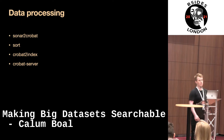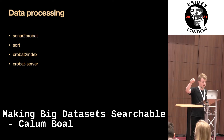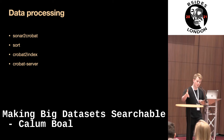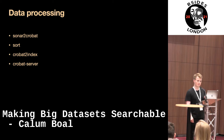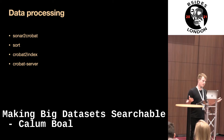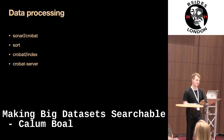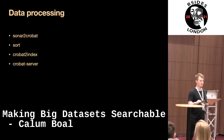Here's how the new pipeline works. We have a tool called Sonar to Crobat, which takes Project Sonar data and converts it into our Project Crobat format. We sort that data, then use Crobat to index to calculate an index over that data so we can instantly jump to the place in the file we need. Then Crobat server is just a gRPC/HTTP server that serves that data to you from requests.